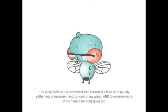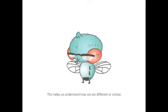The Wing Machine is a convenient tool because it allows you to quickly gather lots of measurements on fly wings and to measure many flies too. This helps us understand how flies are different or similar and it causes no harm to the fly, which is great.